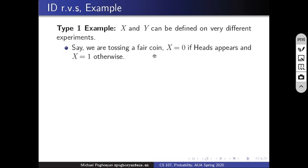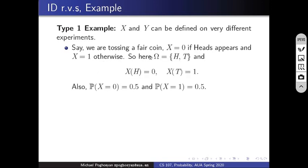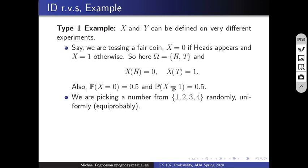For Type 1: we toss a fair coin, and X is 0 if heads appears and 1 otherwise. Our sample space is {heads, tails}. X(heads) = 0, X(tails) = 1. Because it's a fair coin, P(X=0) = P(heads) = 0.5 and P(X=1) = 0.5. So X is Bernoulli(0.5), taking values 0 and 1 with probabilities 0.5 each.